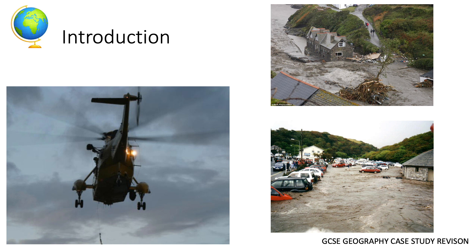A flash flood is when lots of water suddenly flows into a river causing it to overflow its banks. Our case study is the village of Boscastle on the north coast of Cornwall. Boscastle experienced a flash flood on the 16th of August 2004, and we are interested in the causes, the consequences, and the responses to the flood.